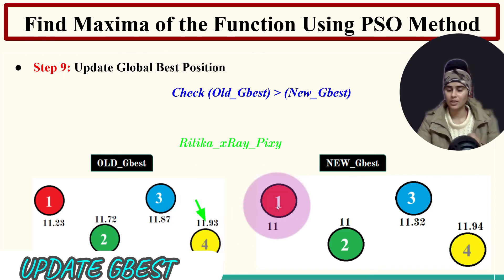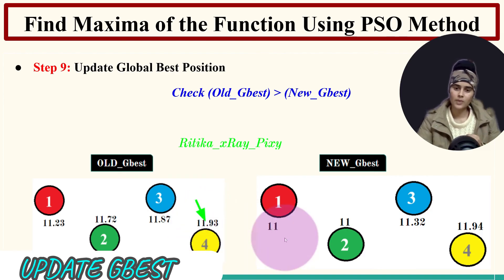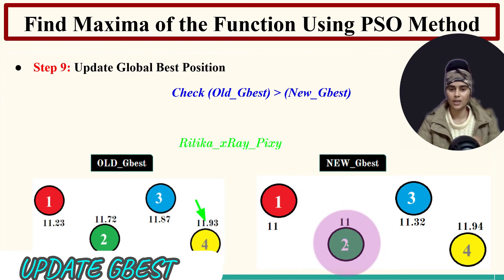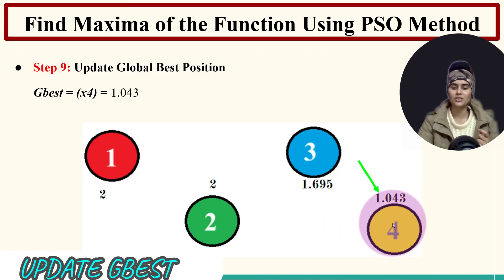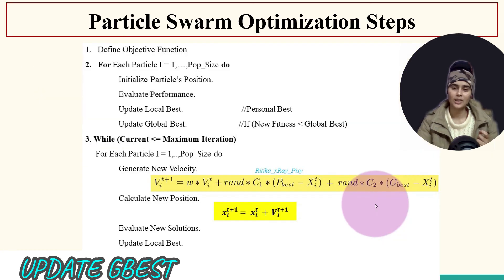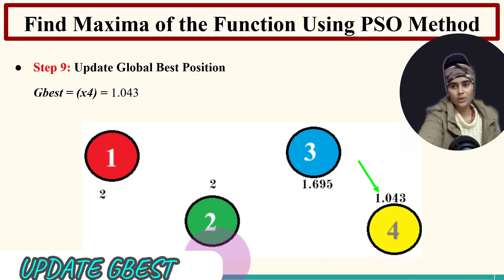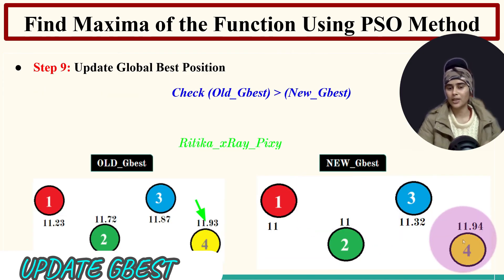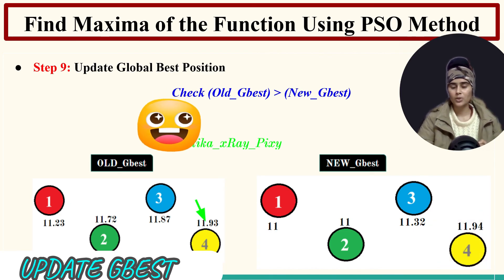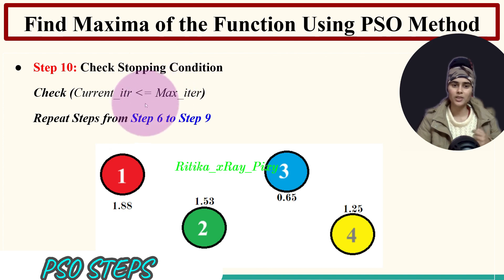We update the global best. Previous global best fitness was 11.93. Comparing with new solutions: particle 1 - older is better; particle 2 - older is better; particle 3 - older is better; particle 4 - the new solution (11.99) is better, so we update the global best to particle 4's new position = 1.043. We display the best position: 1.043, and best fitness value: 11.99 after two iterations. We check the stopping condition - if not met, repeat steps 6 to 9.